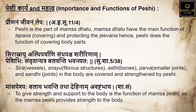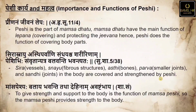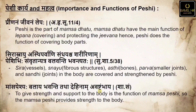'Sira, Snaayu, Asthi, Parvani, Sandhi' — vessels, ligaments, bones, small joints, and joints in the body are covered and strengthened by Peshi. The muscles cover bones, ligaments, and vessels — the function of Maamsa is Lepana, covering and strengthening these parts. 'Maamsa Peshi balayaha bhavanti tatha dehinam avashtambhaya' — Sharangadhara says providing strength and support to the body is the ultimate function of Maamsa Peshi.